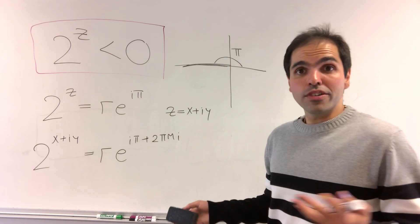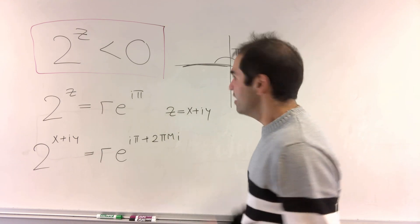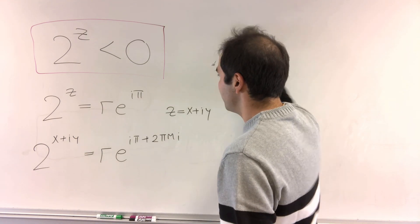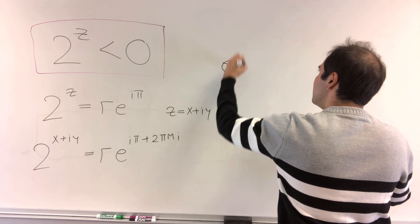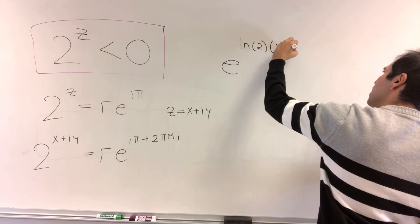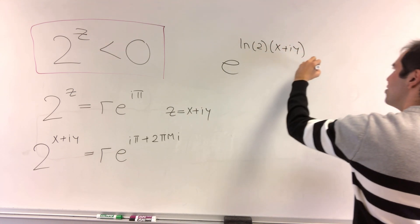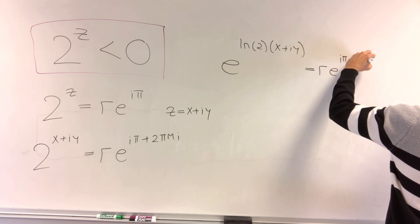And we'll see there's something quite nicely going on, at least geometrically. So what happens then is, what is 2 to the blah? Well, it's e to the ln of 2 times x plus i y,